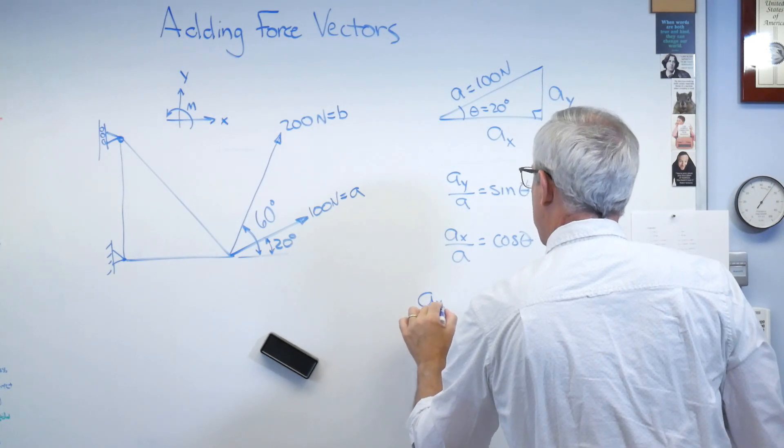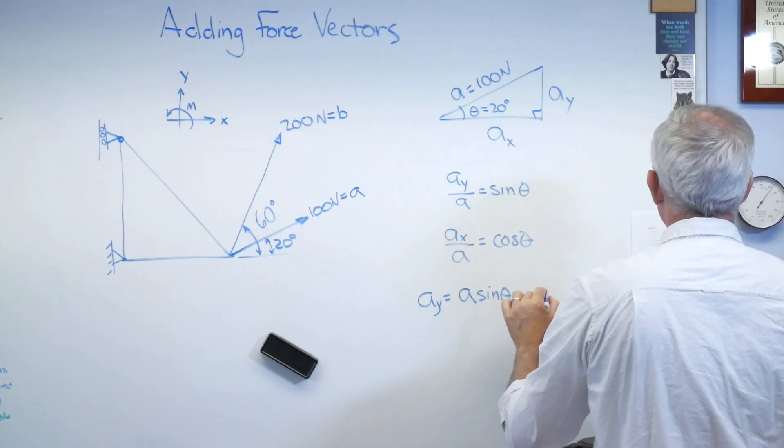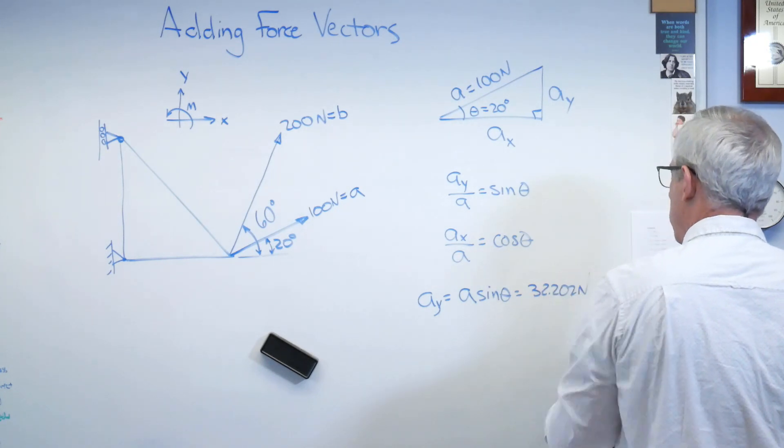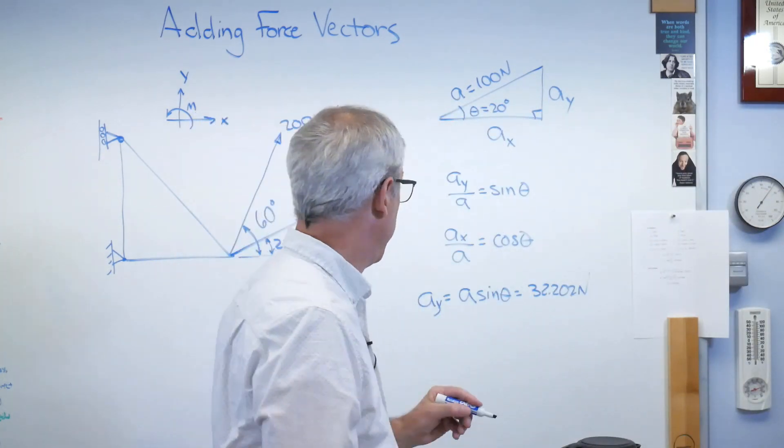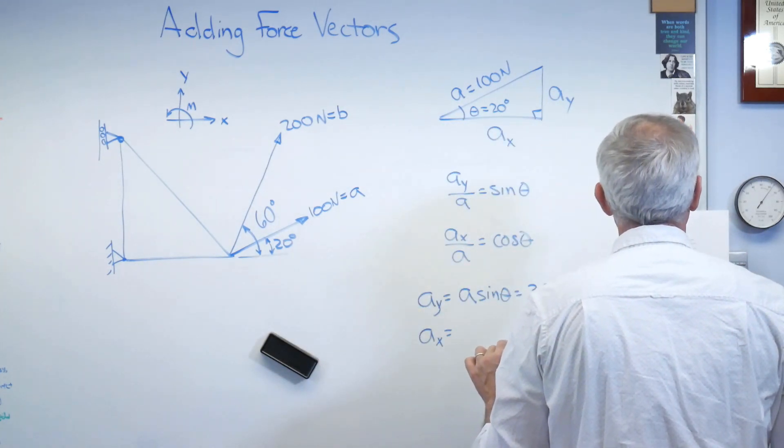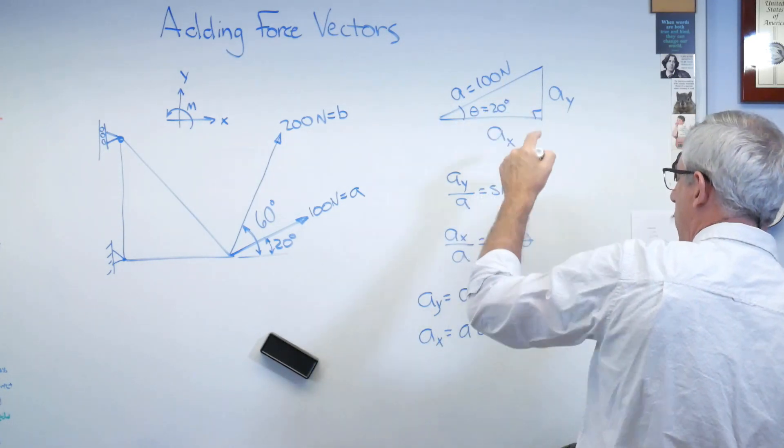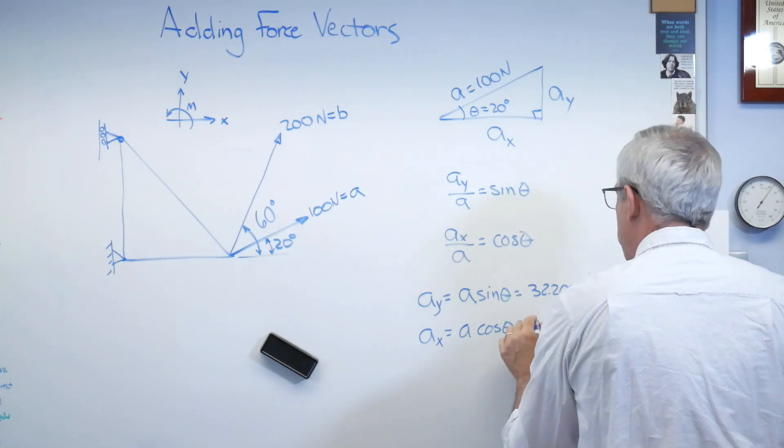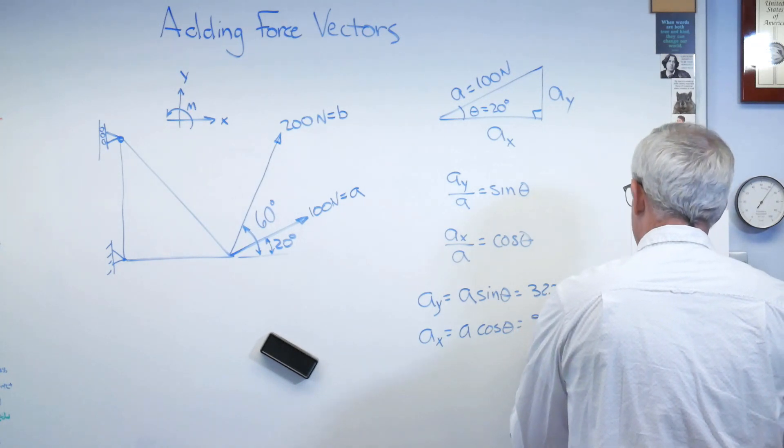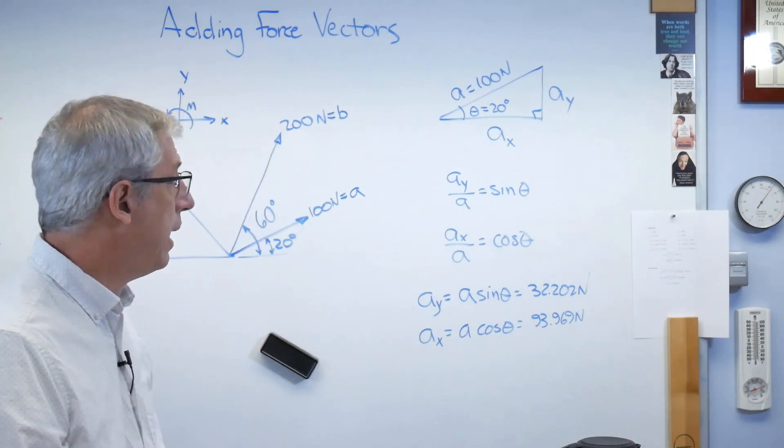Let's just carry that out here. That means Ay is A sine theta, and if you work that out, you get that to be 34.202 newtons. So Ax is now going to be A cosine theta by using the same logic on our force triangle, and that works out to 93.969 newtons. So there's Ay and Ax.